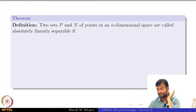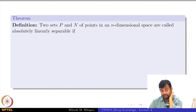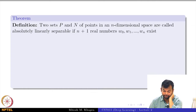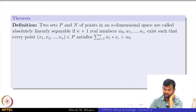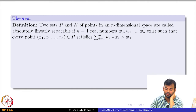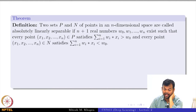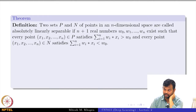If you have two sets of points P and N in an N-dimensional space, then we say that these points are absolutely linearly separable if there exist some N+1 real numbers W_0 to W_N such that every point belonging to P — where P is the case where the output is 1 — satisfies one condition, and every point in the negative set satisfies the other condition. So this is just formally defining what we have been saying so far.